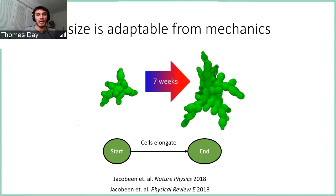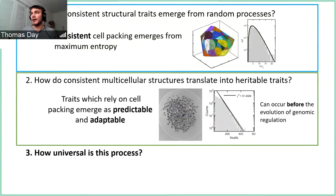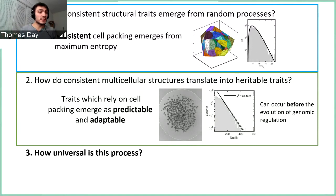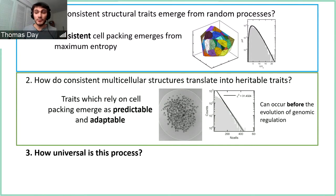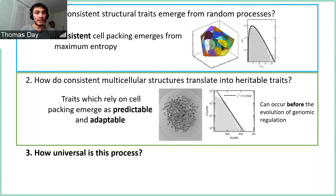So we have a two-step process: first, consistent cell packing can emerge just from the physics of maximum entropy statistics; then any traits that rely on cell packing emerge as predictable and adaptable — and this can happen before the evolution of genomic regulation of group-level traits. How universal is this process is now the last part of my talk.